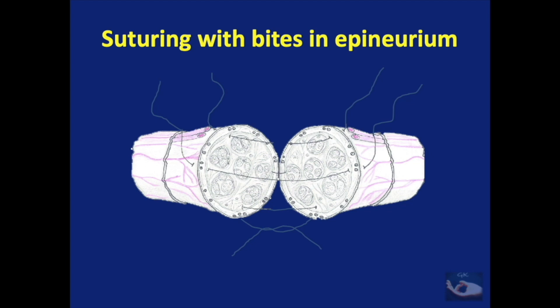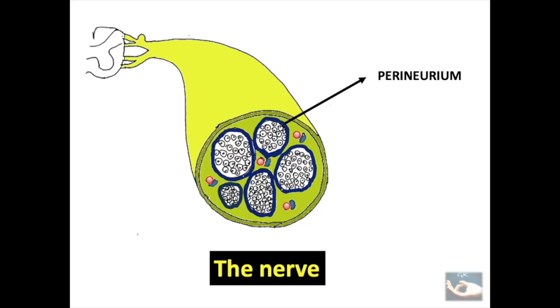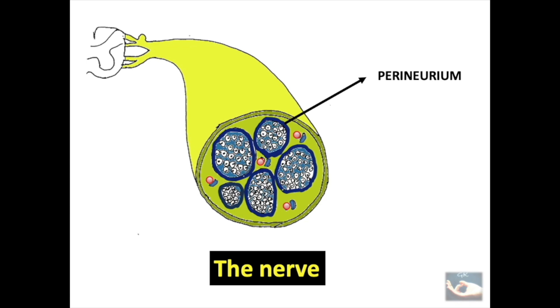Hence, the suture should be placed in the epineurium alone without harming the fascicles. Within the surrounding layers of the external and internal epineurium, we have the fascicles which are surrounded by a layer known as the perineurium. This perineurium too extends into the fascicles surrounding the neurons.